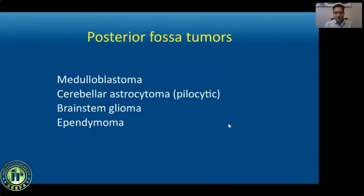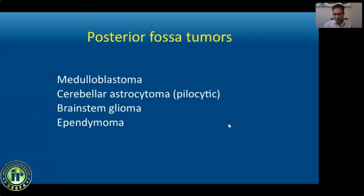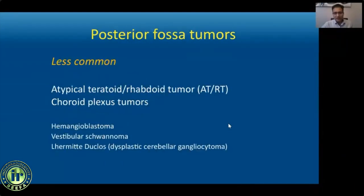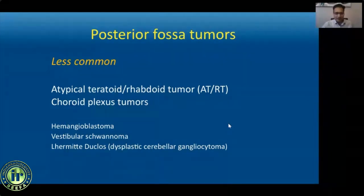The four major posterior fossa tumors are medulloblastomas, cerebellar pilocytic astrocytomas, brainstem gliomas, and ependymomas — these will be the focus of my talk. There are also less common posterior fossa tumors such as ATRT and choroid plexus tumors which should be considered in the differential diagnosis in appropriate scenarios, and certain tumors seen only in the setting of genetic syndromes.